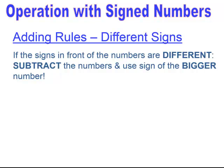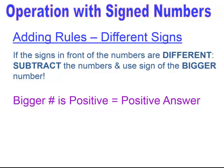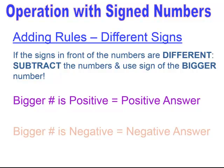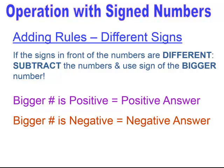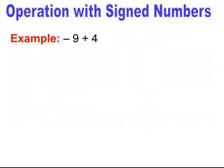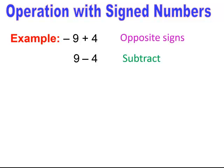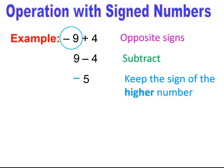When we talk about adding rules with different signs — if the signs in front of the numbers are different, difference means subtraction. So you're going to subtract the numbers and use the sign of the bigger number. If the bigger number is positive, four minus two is two — it's going to be a positive number. But if the bigger number is negative, like negative nine plus four, you subtract the smaller from the larger: nine minus four gives five, and since nine is the higher number and it has a negative sign, the answer is negative five.